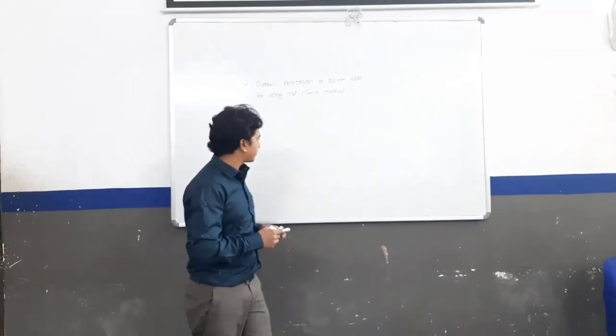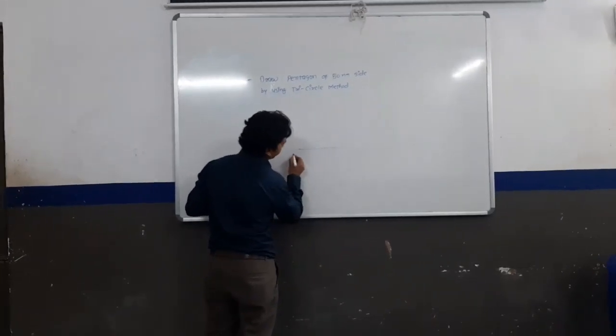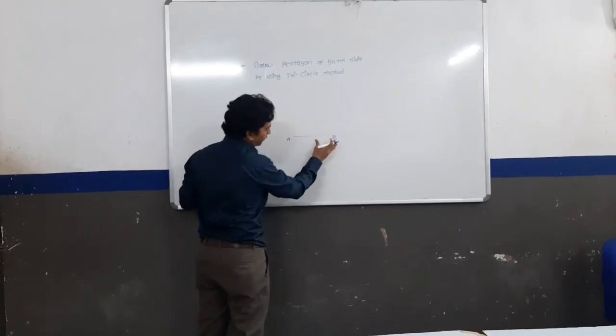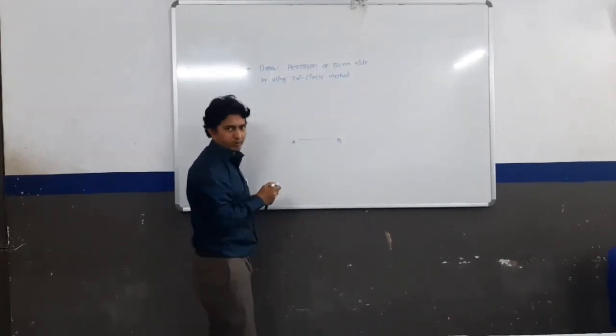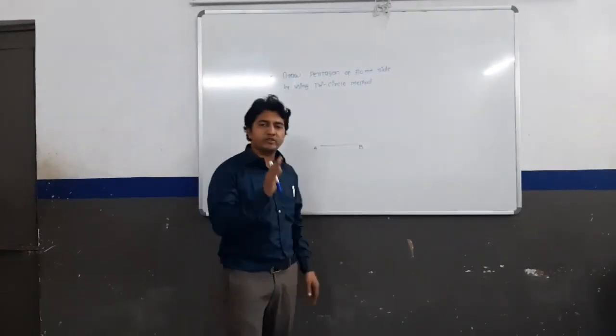First of all, step number one. Now we are going to draw the horizontal line of 50mm. The horizontal line of 50mm, the name is AB. Now the method is tri-circle method.